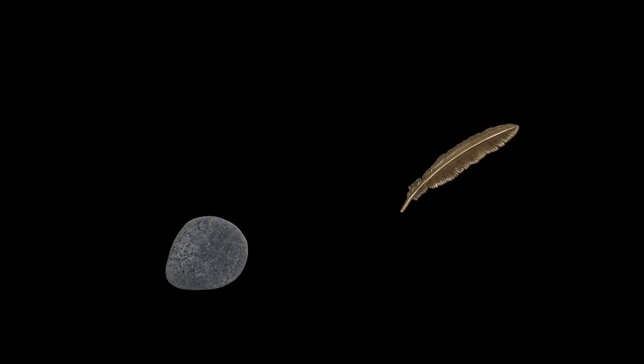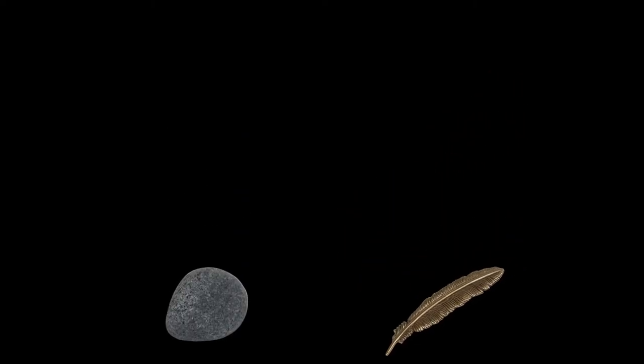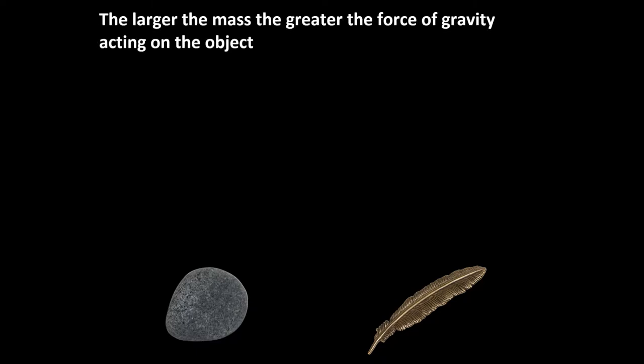If we drop this pebble and feather at the same time, which one do you think will hit the ground first? As you can see, the pebble hits the ground first. Mass and surface area have an effect on how fast an object reaches the ground. This equation is a general equation for the force exerted on an object based on its mass and acceleration. The greater the mass, the greater the force. The pebble has a higher mass than the feather, so the force pulling the object towards the ground is greater.